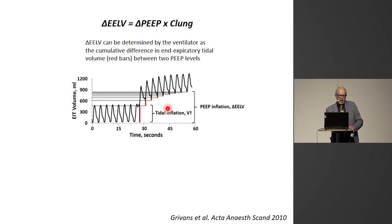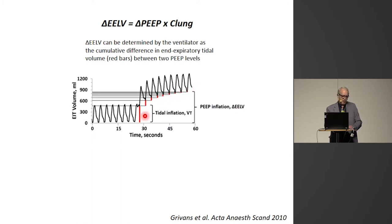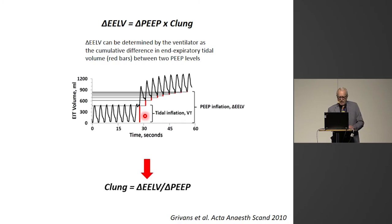The only thing we need to determine is the delta ELV. That can be done easily by the ventilator pneumotachograph, which can accumulate all the differences in expiratory tidal volume between two PEEP levels. This is a very easy procedure that can be automated. So we can calculate C_Lung as delta ELV divided by delta PEEP.